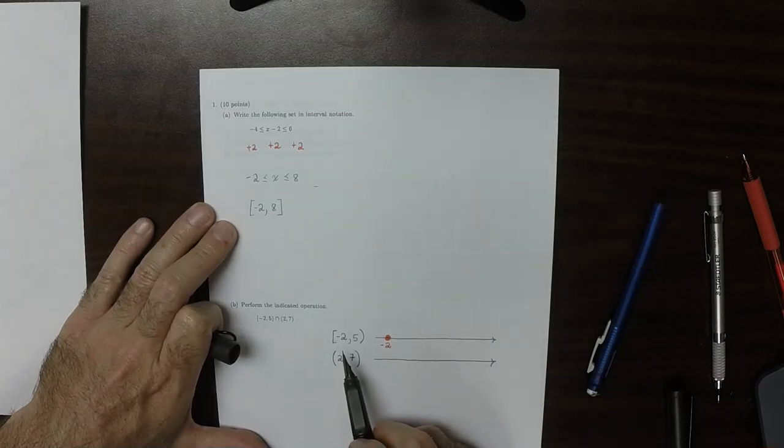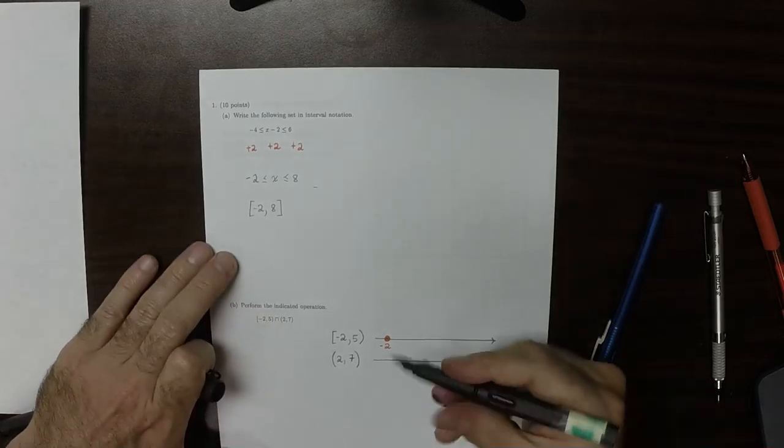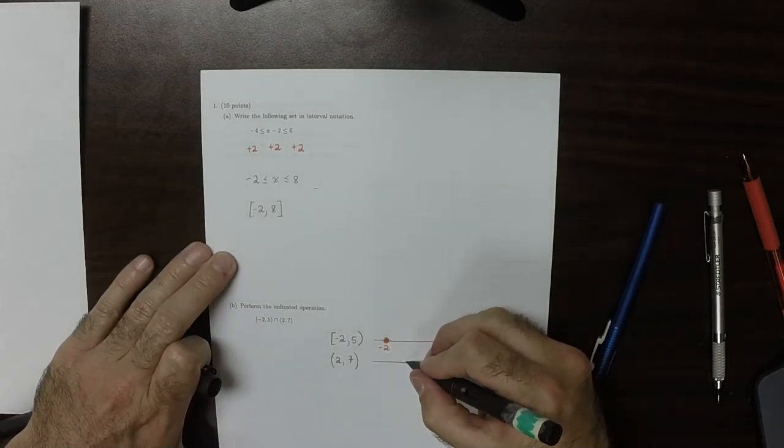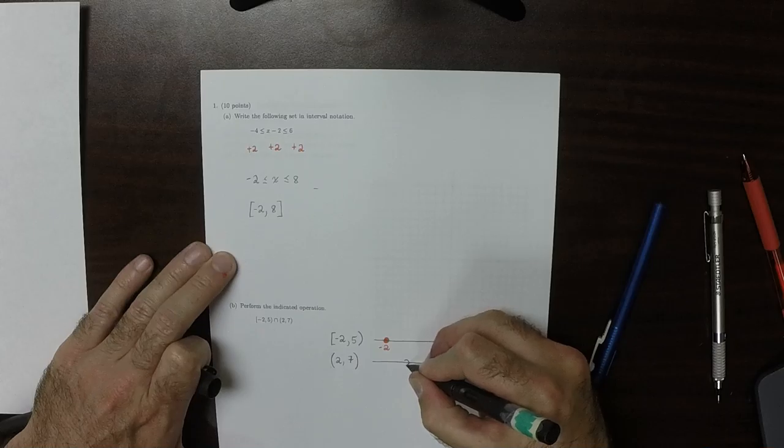So of the remaining endpoints, 5, 2, and 7, 2 is furthest to the left, but it's right of negative 2. So I'll draw it here, and it's open.